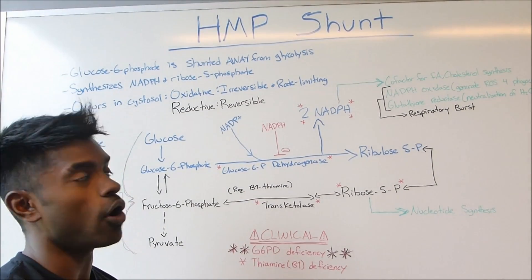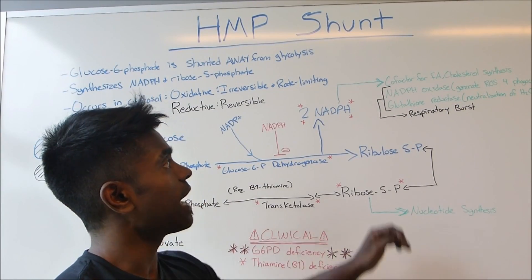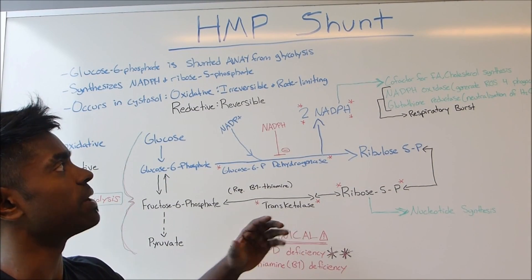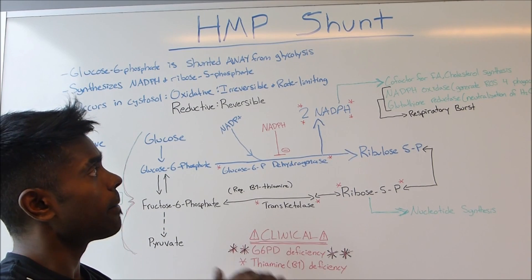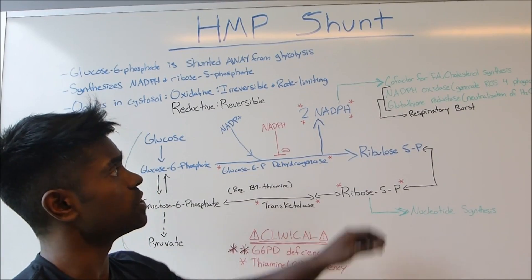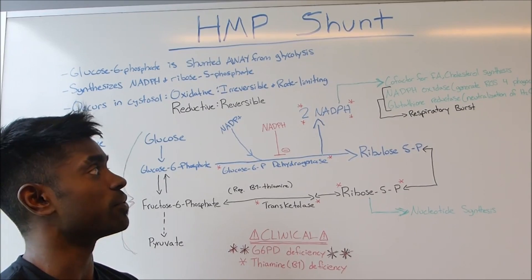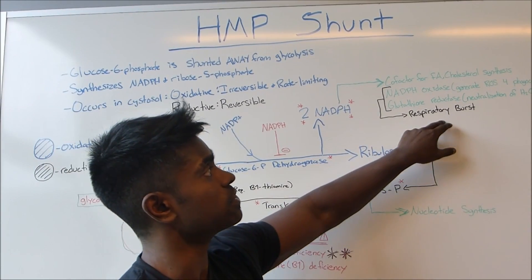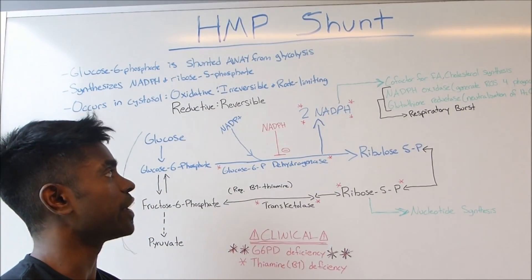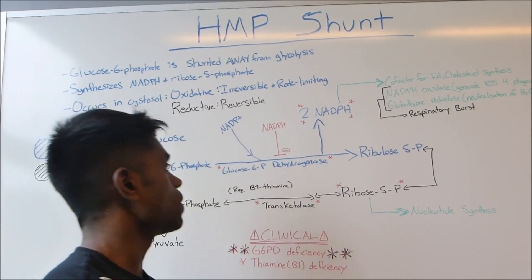NADPH is also used by glutathione reductase, which is also mentioned in the respiratory burst video. Glutathione reductase is used for the neutralization of H2O2 in order to make sure that the cell does not get damaged when reactive oxygen species are around.